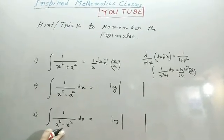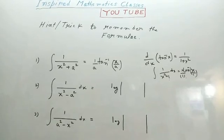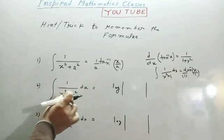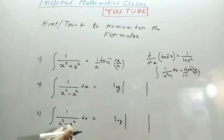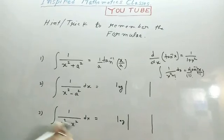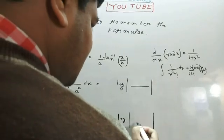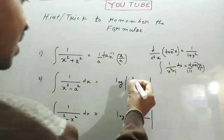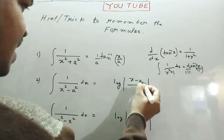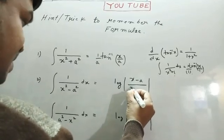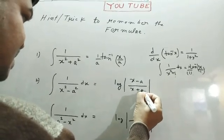x minus a upon x plus a, here just a plus x, plus is upper and minus is lower. That is plus is numerator and minus is denominator. Just a is come before. Here a is come last x plus a, here a plus x. In this method, you can remember the student.